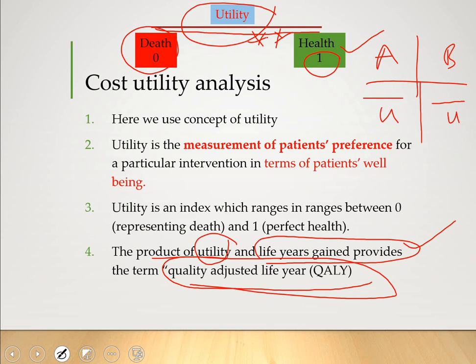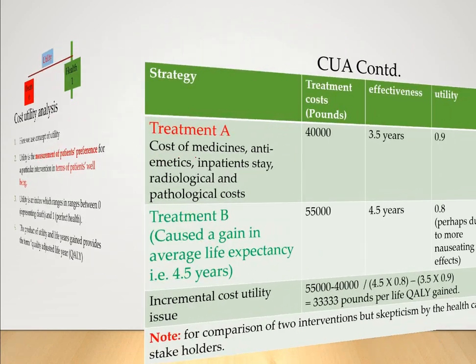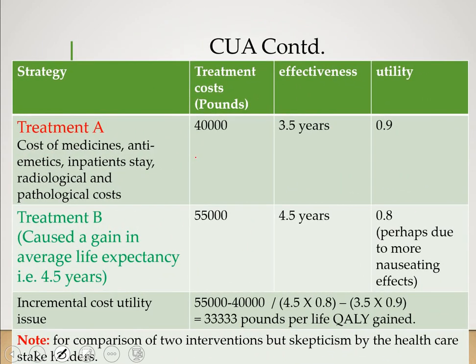These utility values represent the health status of a patient and are expressed in terms of patient preferences — this is a technical point to remember. It is the patient who interprets this, not the clinician. For example, extending the cost-effectiveness analysis by adding a utility column, what is important is that you multiply the effectiveness with the utility value.